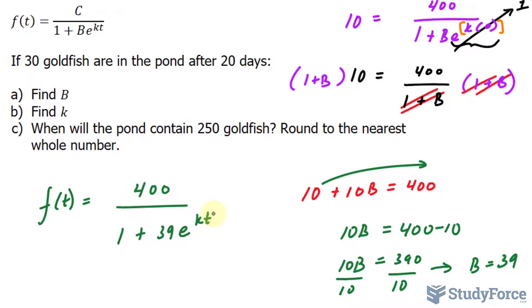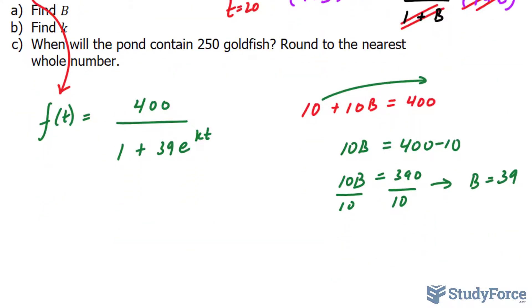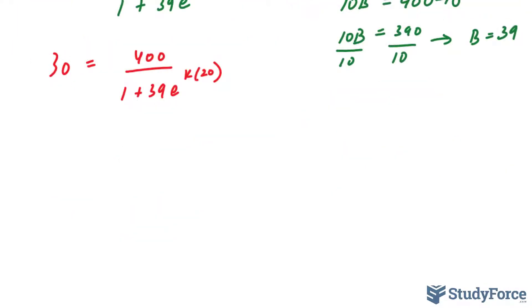If we want to find out what k is, I'll substitute the value 30 into here. And that happens after 20 days, so this will be my new t value. Let's go ahead and do that. We have 30 is equal to 400 over 1 plus 39, e, k, and that's 20. This will require some more algebra.